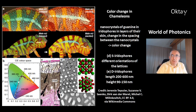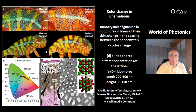This is how the color change works. There are nanocrystals of guanine in iridophores in layers of the skin. The change in the spacing between the nanocrystals brings the color change. In this picture, you can see structures labeled C and D — these are called S-iridophores, with different orientations of the lattices.